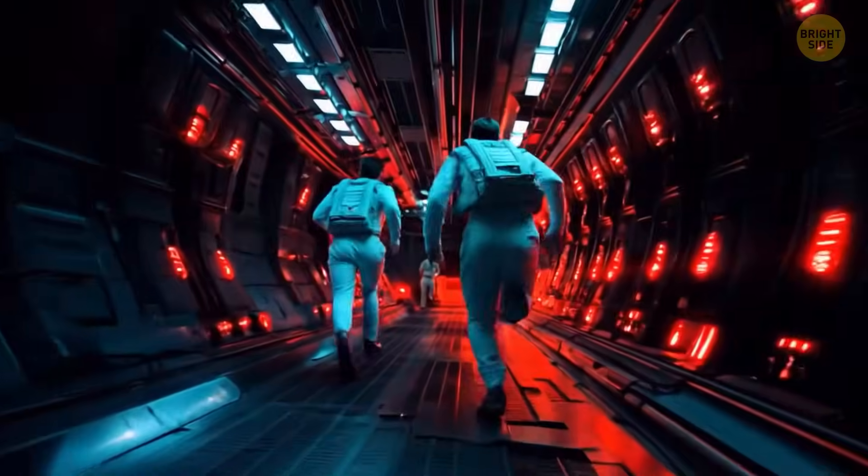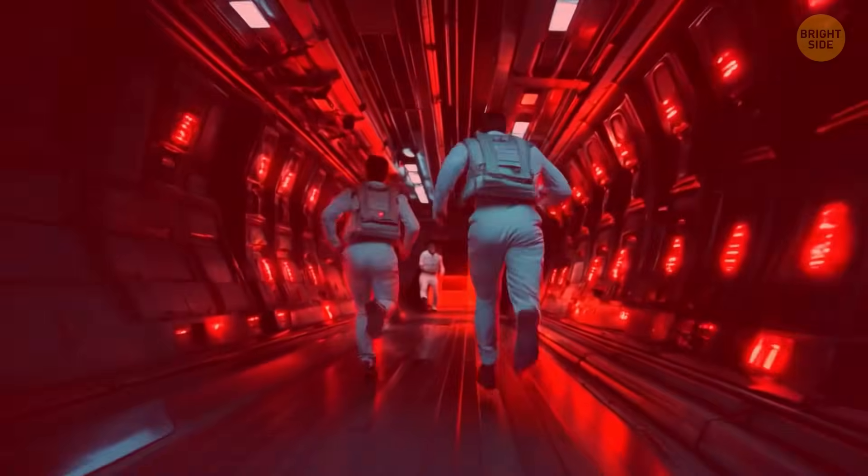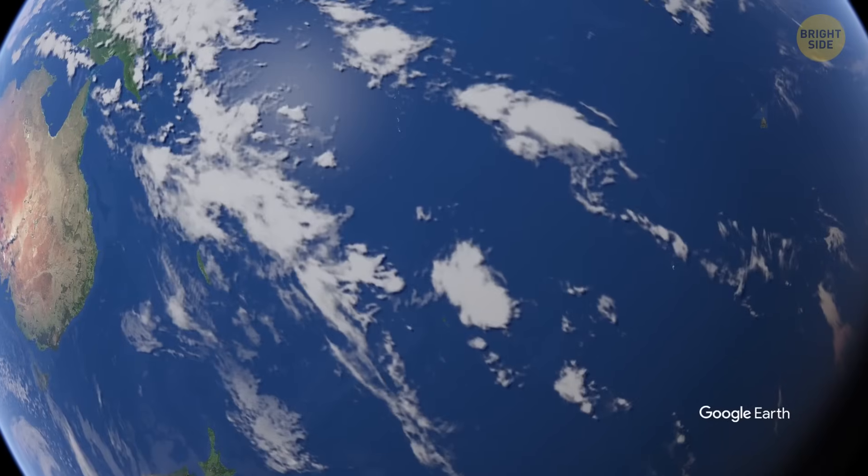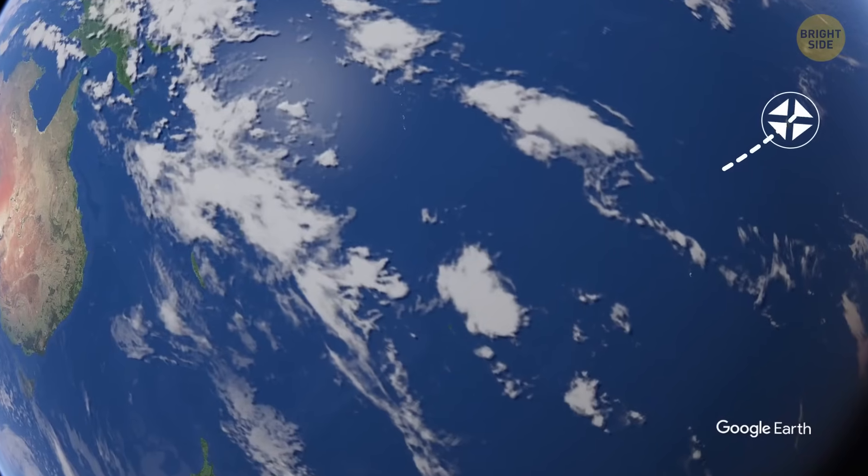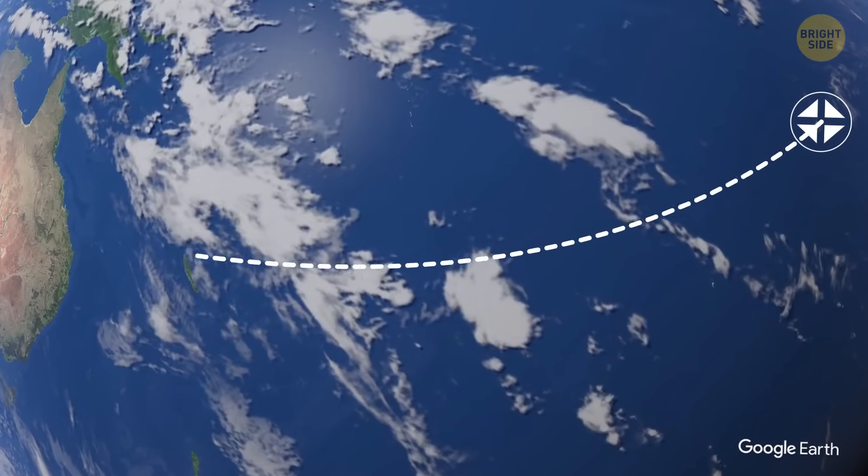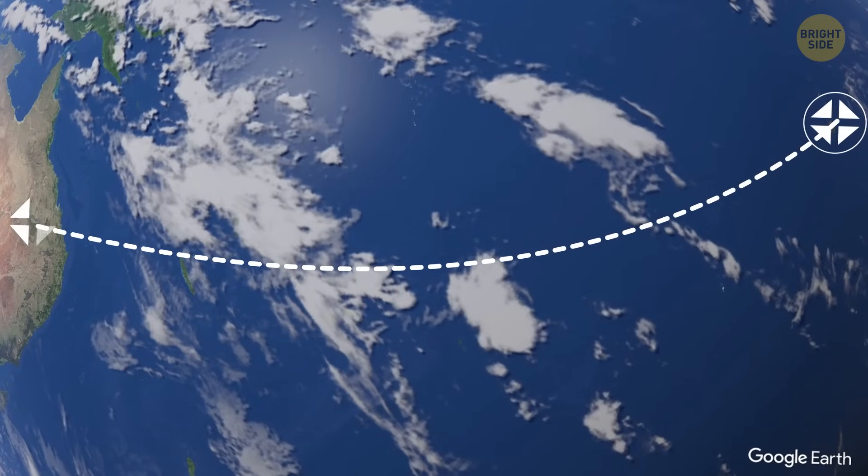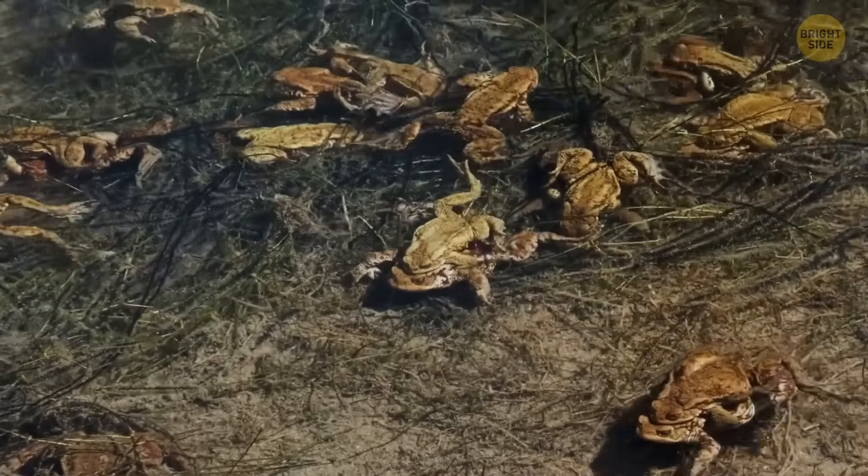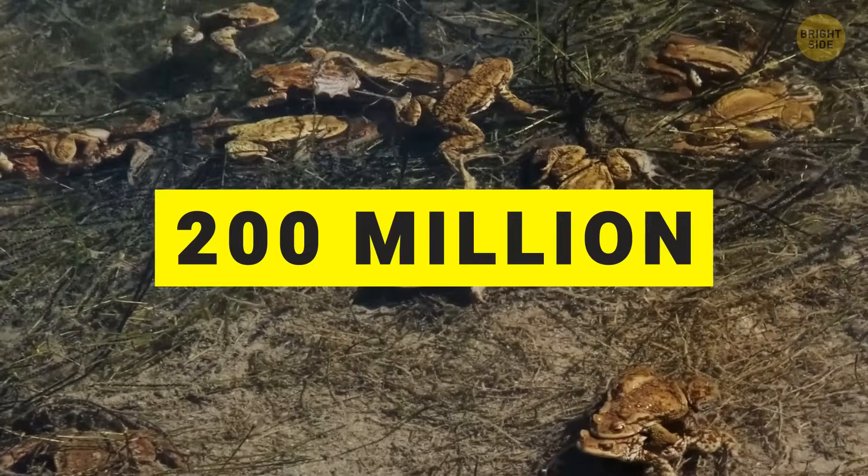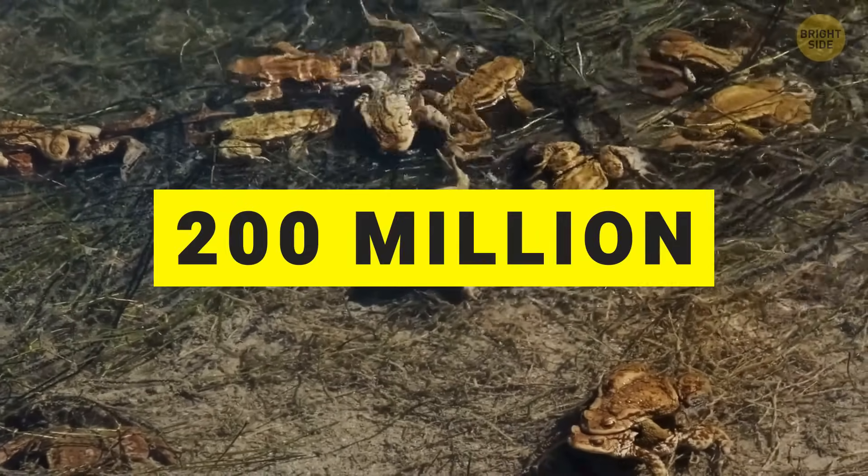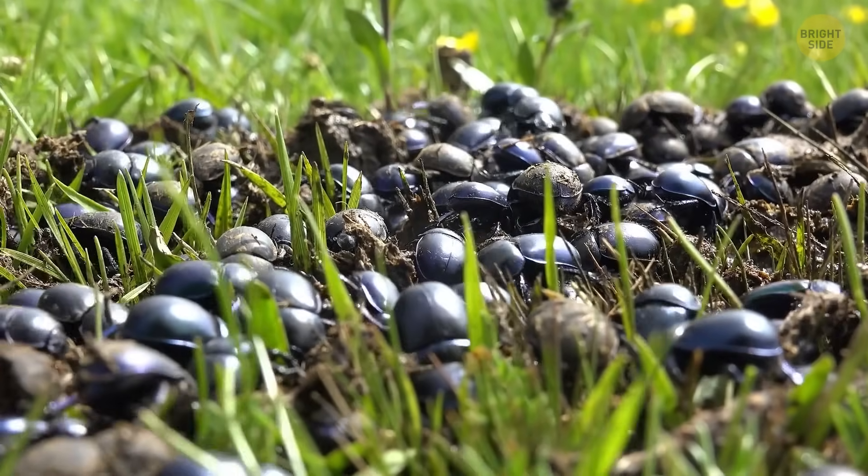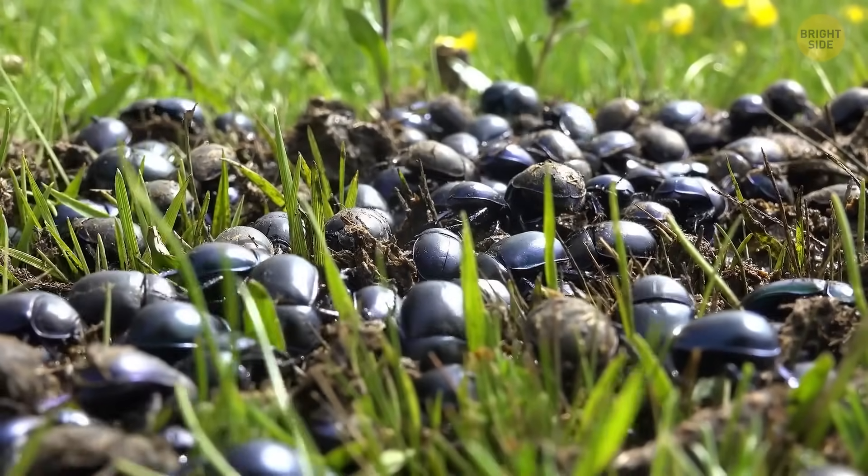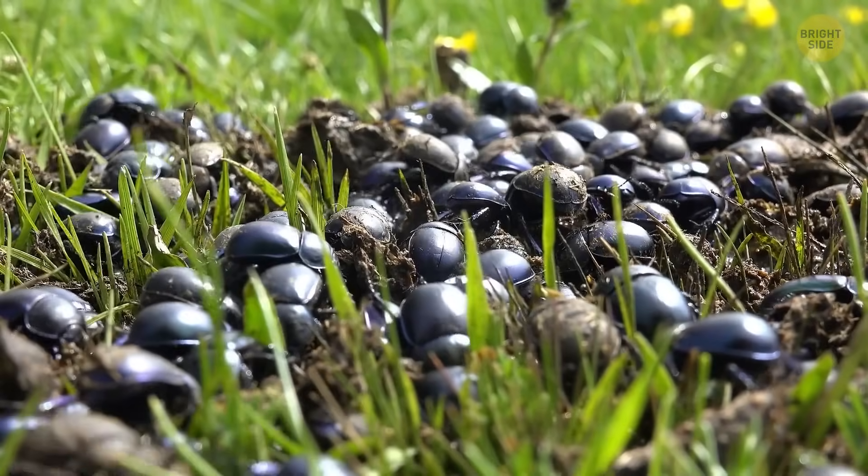The gray goo scenario might sound far-fetched, but history is full of examples where well-intentioned ideas go horribly wrong. Take Australia, for instance. In 1935, the country imported cane toads from Hawaii to eat the beetles that had been destroying sugar cane crops. Fast forward to today, and there are over 200 million toads wreaking havoc on local ecosystems. The beetles? Well, they're still munching away, completely unfazed. So it's a classic case of good idea, bad execution.